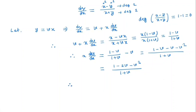So we separate the v and x terms. We have (1 plus v) divided by (1 minus 2v minus v squared) dv is equal to dx divided by x.